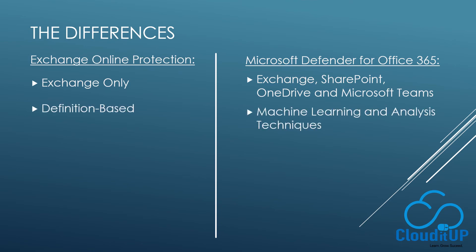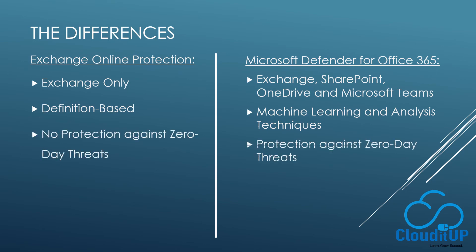Exchange Online Protection relies on the latest definitions to detect malicious content, while Microsoft Defender for Office 365 uses machine learning and analysis techniques to detect malicious content. Only Microsoft Defender for Office 365 provides protection for zero-day threats.